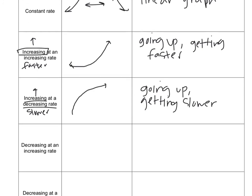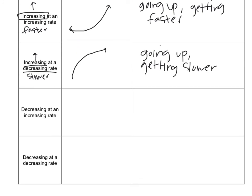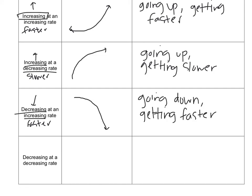Now we have decreasing at an increasing rate. That's just the reverse. Now the graph is going down and it's getting faster. It starts off going down slowly, and then all of a sudden gets really fast. This happens a lot in science when things are falling. When you drop something from a high distance, its speed starts off slow, and then as gravity continues to pull it down, it gets faster and faster.